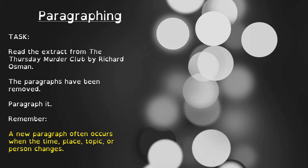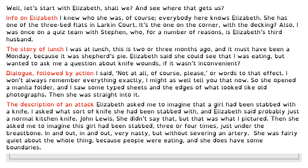So here's your first task. In your worksheet for today, you've got an extract from the Thursday Murder Club. It's all about a lady talking about another lady called Elizabeth. But I've taken the paragraphs out of it. I want you to think about that rule — that a paragraph occurs when the time, place, topic, or person changes — and I want you to paragraph that piece. Pause the video now, have a read through that extract, and put the paragraphs where you think they should go.